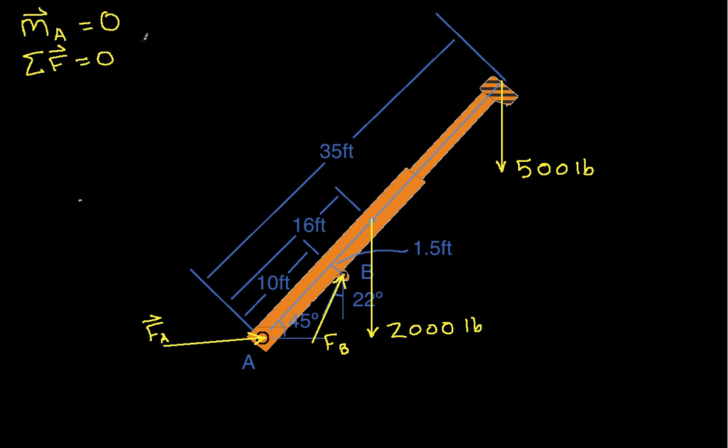And this will actually give us then the equations we need to find the things we don't know, which are the magnitude of FB, that is the magnitude of the force applied by the hydraulic cylinder, and the magnitude and direction of the reaction force FA.